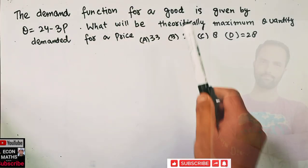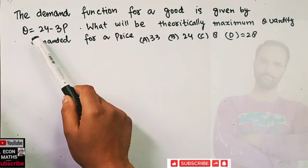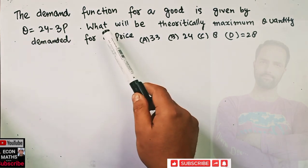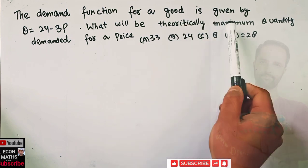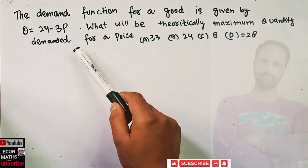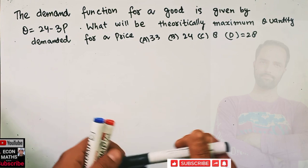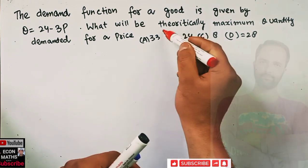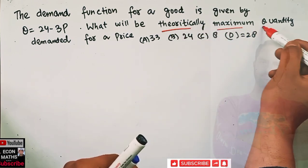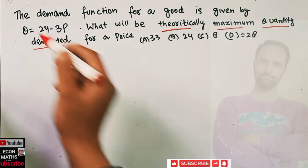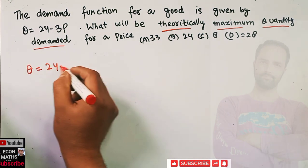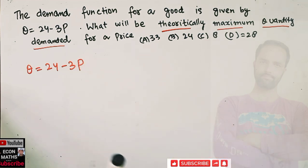The next question: the demand function for a good is given by q = 24 minus 3p, where q is the quantity and p is the price. We have to find the theoretically maximum quantity demanded for a price. What will be the theoretically maximum quantity demanded given this demand equation? We have q = 24 minus 3p as our demand function.